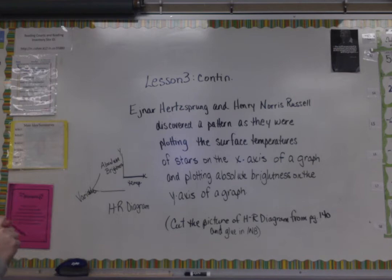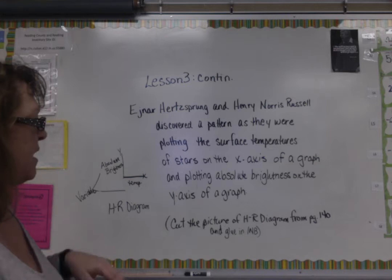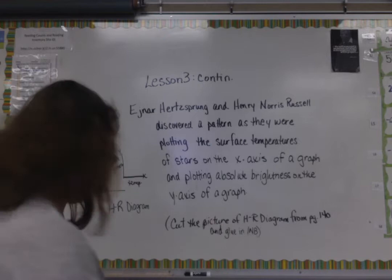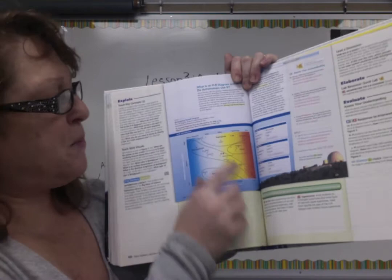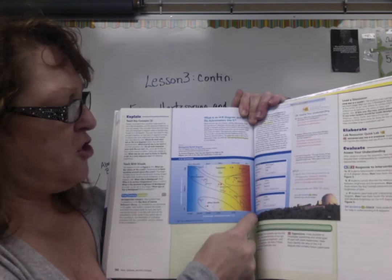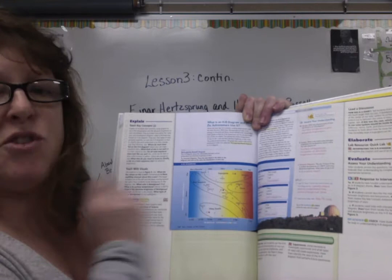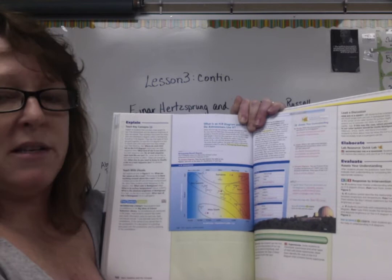They ended up calling this an HR diagram. Now if you look on page 140 in your science books, you will find a picture of the HR diagram. It is this pretty blue and white and yellow and red color, and it shows the different areas where the stars are clustered — basically by their absolute brightness and their temperature, just like it shows on the graph.